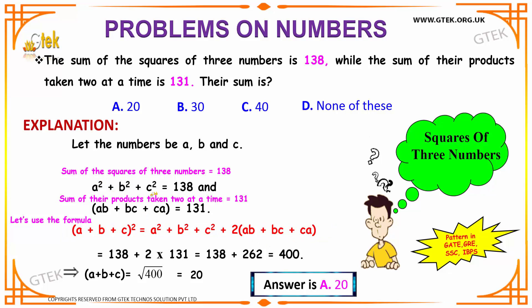Simply you have to substitute your value of 138 over here and 131 over here. 138 plus 2 into 131 is equal to 138 plus 262, which is nothing but 400.